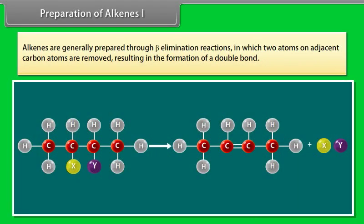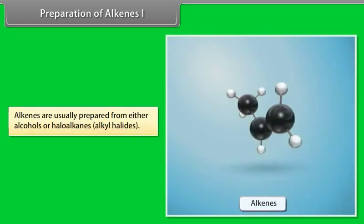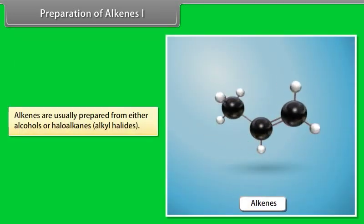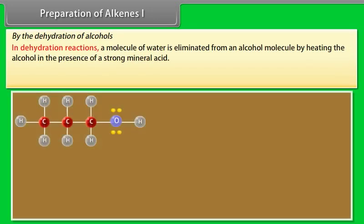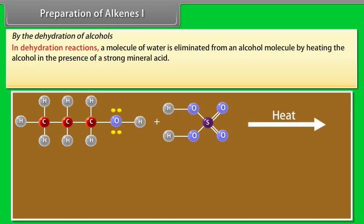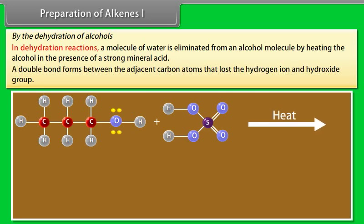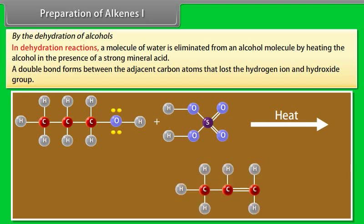Preparation of alkenes, Part 1. Alkenes are generally prepared through beta elimination reactions in which two atoms on adjacent carbon atoms are removed, resulting in the formation of a double bond. Alkenes are usually prepared from either alcohols or haloalkanes (alkyl halides) by the dehydration of alcohols. In dehydration reactions, a molecule of water is eliminated from an alcohol molecule by heating the alcohol in the presence of a strong mineral acid. A double bond forms between the adjacent carbon atoms that lost the hydrogen ion and hydroxide group.